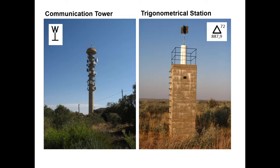And then we have our trigonometrical station. Remember, the number below — for example 887.9 — represents the height in meters. The 72 in this example will represent the number of the trigonometrical station.